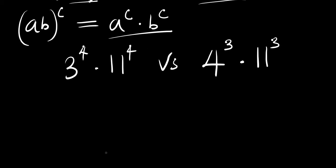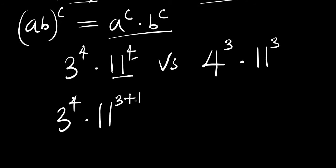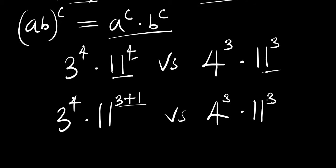At this point, we can express 11 raised to the power of 4 as 11 raised to the power of 3 plus 1, since 3 plus 1 equals 4. So we have 3 raised to the power of 4 times 11 raised to the power of 3 plus 1, versus 4 raised to the power of 3 times 11 raised to the power of 3, which we leave as is.